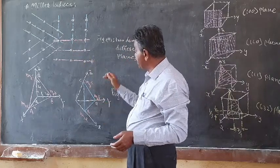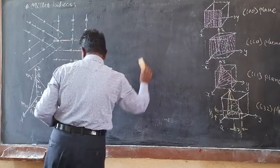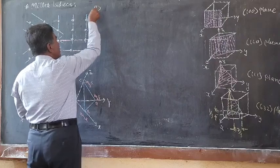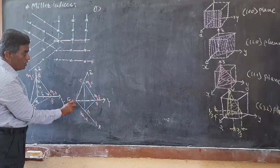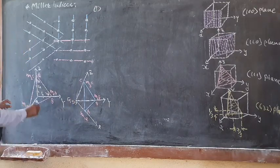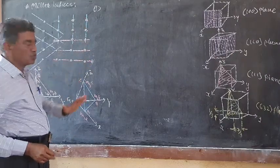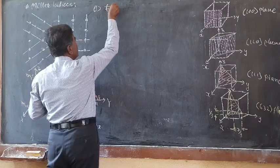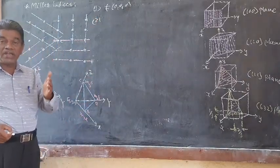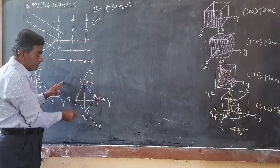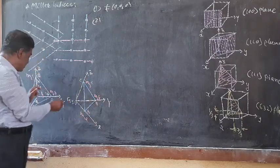To determine the Miller indices of the plane ABC, the following procedure is adopted. First of all, we will consider a plane which does not pass through the origin. Second, we determine the coordinates of the intercept of that plane on the three crystallographic axes x, y, z.